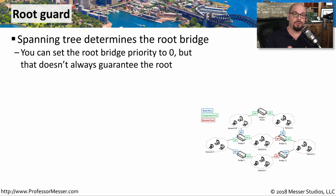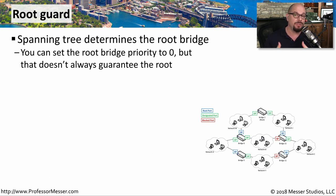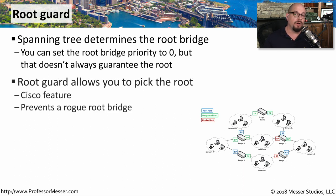Another way to protect your switch interfaces is to enable Root Guard. On any spanning tree network, one switch is going to be the root switch or root bridge. You can manually set the root bridge by configuring a root bridge priority of zero. If any other device also has a priority of zero, spanning tree chooses the one with the lowest MAC address. Root Guard is a Cisco feature that allows you to administratively define which bridge will be the root bridge.